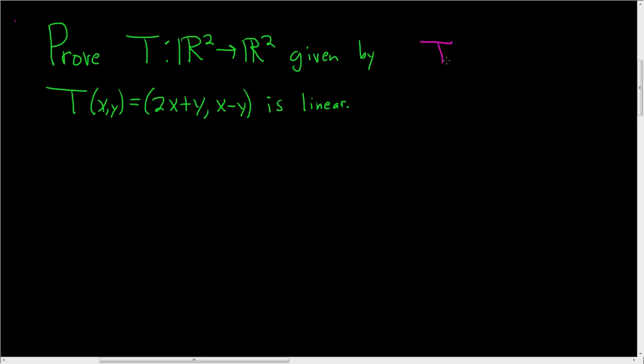So recall that a map T from a vector space V into a vector space W is called linear, or is a linear transformation, if the following two conditions hold.